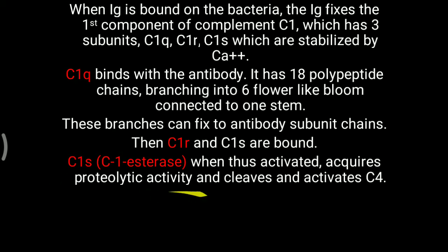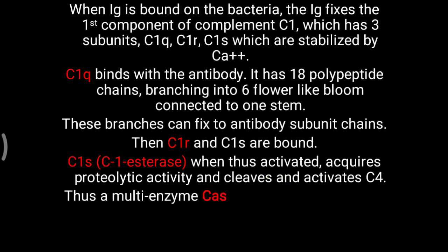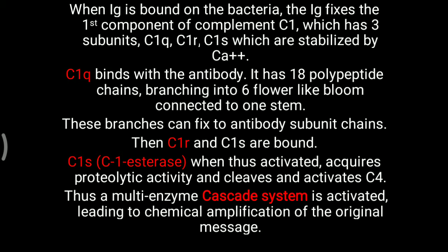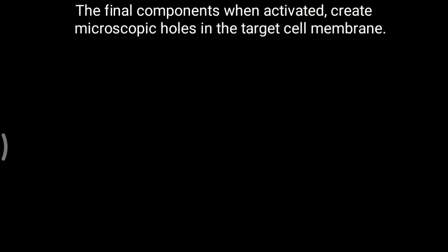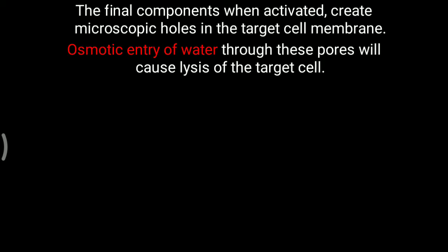C1S, called C1 esterase, when activated acquires proteolytic activity. C1S leads to proteolytic activity — breakdown of proteins — and cleaves and activates the fourth component of the complement system. Thus a multi-enzyme cascade system is activated, leading to chemical amplification of the original message: attachment of antibody to antigen. The final activated component creates microscopic holes in the target cell membrane, and osmotic entry of water through these pores causes lysis of the target cell.